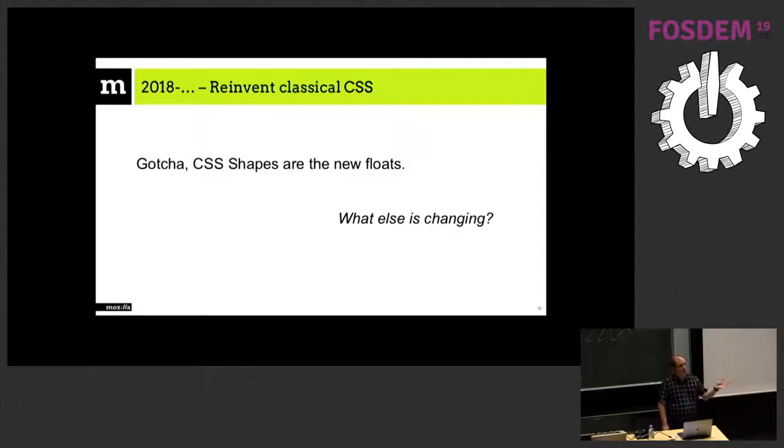Until now, we have mostly reinvented some things that were already existing. Grids are the old table. Flexbox are a little bit new but not completely different shapes. Modifying the way we do floats. But basically, it's only classic CSS. In fact, there is a lot of other classic CSS that is being reinvented lately.